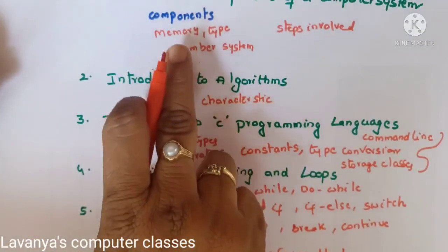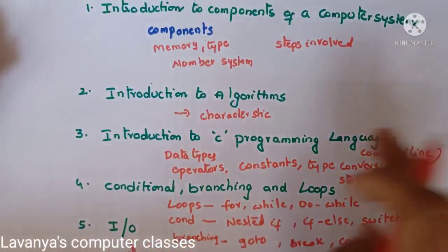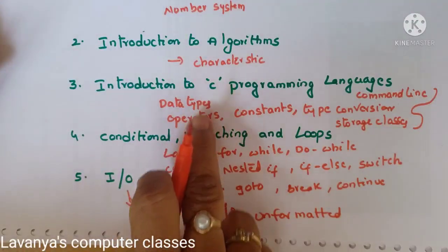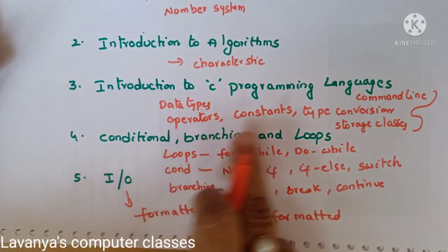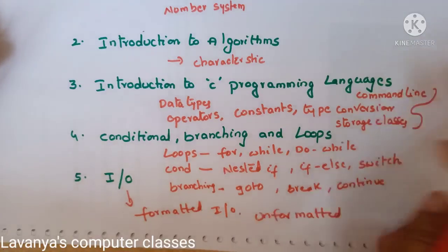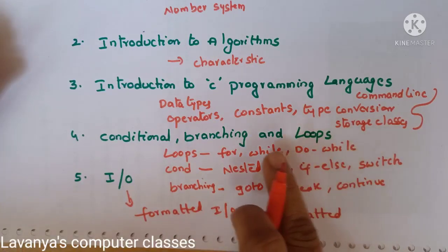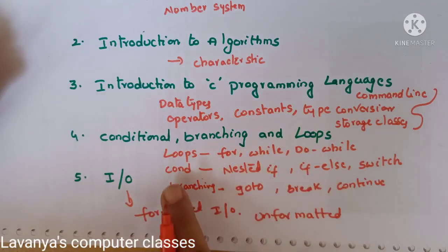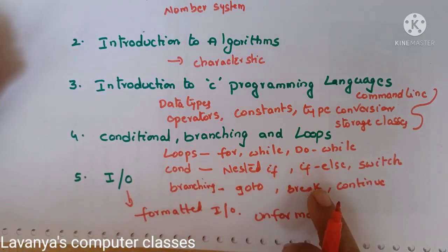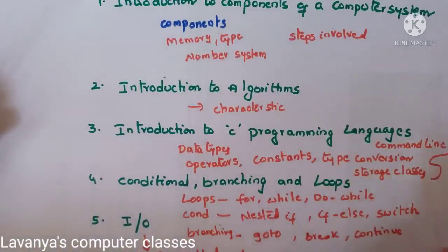Summary of Unit 1 important questions: components of computers, memory and its types, steps involved in programming for problem solving, introduction to algorithms, characteristics of algorithm. Very important questions are data types and operators — compulsorily one question is coming. Type conversion, command line arguments, storage classes — in these three, compulsorily one question is coming. Loops are very very important — for loop, while loop, do-while — everything with syntax and programs. Conditional statements: if-else, nested-if, switch statement. Branching: goto, break, continue. Formatted and unformatted I/O — these are all the important questions in Unit 1 of PPS.